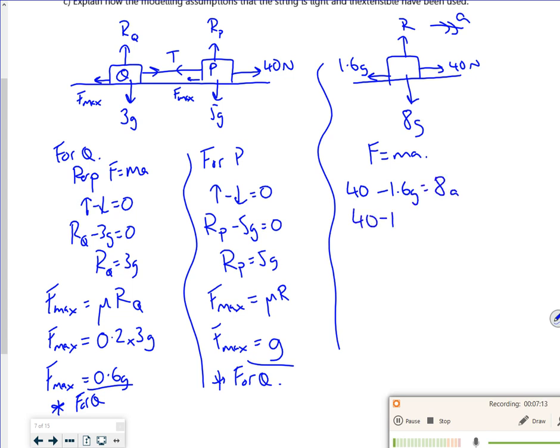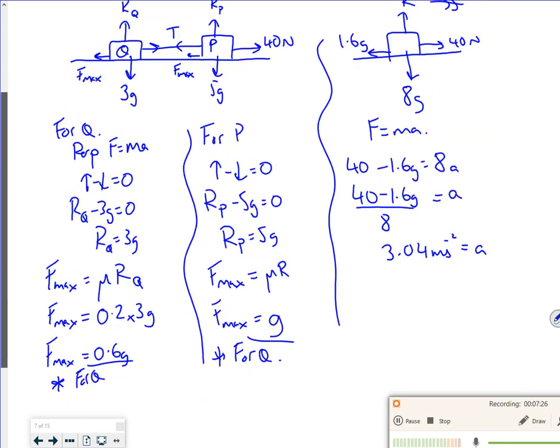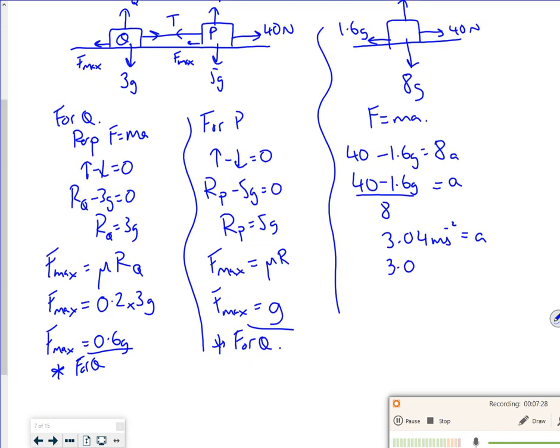Right, so let's do F equals ma. So I've got 40 newtons minus 1.6g is 8 times a. So if I do 40 minus 1.6g over 8, that gives me an acceleration of 3.04 meters per second squared. G is 9.8, so 3.0 meters per second squared to 3 sig fig is my acceleration.